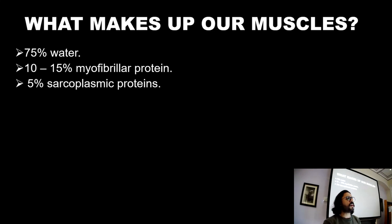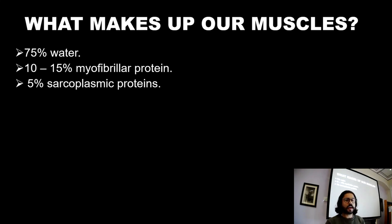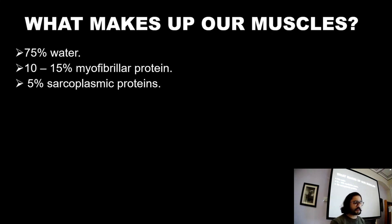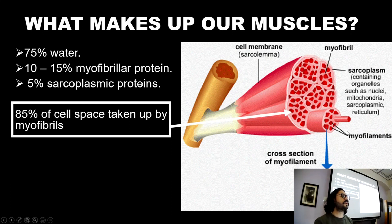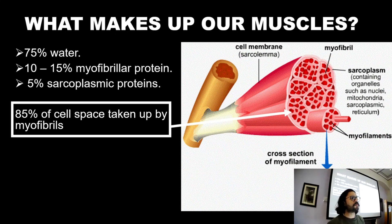Then we've got 5%, which is sarcoplasmic protein. So you're going to have your mitochondria, your sarcoplasmic reticulum, molecules involved in glycolysis, etc. So you've got non-myofibrillar content in there as well — anything which is in the sarcoplasm, which is the normal cellular contents. The nucleus would come under there as well, along with your ribosomes and all of those molecules.